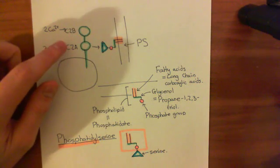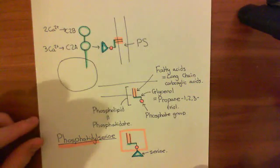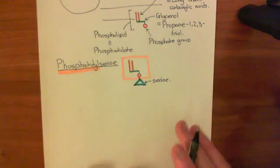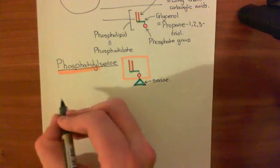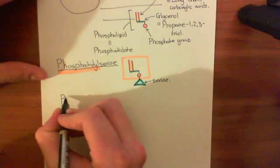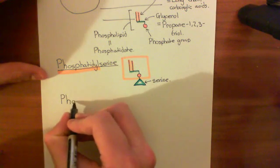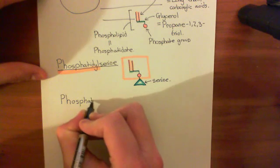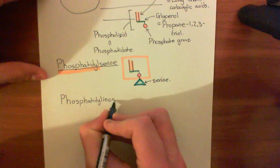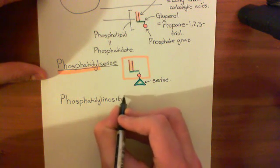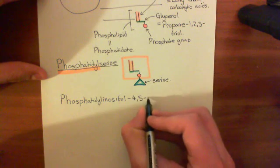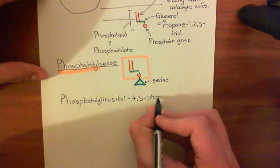C2B also binds to a lipid in the phospholipid bilayer, and this lipid is potentially a more famous one than phosphatidylserine because of its involvement in the GQ pathway. It's phosphatidylinositol 4,5-bisphosphate, which is more famously known by its abbreviation PIP2. If you take the P for phosphatidyl, the I for inositol, and then P for phosphate, and you've got two of them, so it's PIP2.